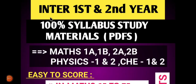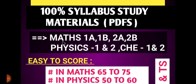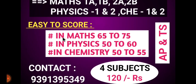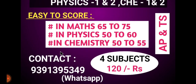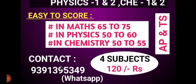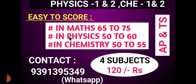Students, for intermediate first year and second year, we have 100% materials in PDF form. We cover maths 1A, 1B, 2A, 2B, physics first and second year, and chemistry first and second year. Easy scores: maths 50–60, physics 50–60, and chemistry 50–55. Contact us via WhatsApp — the number is in the description — for first year, second year, and 120 marks preparation. AP and Telangana students have a chance.